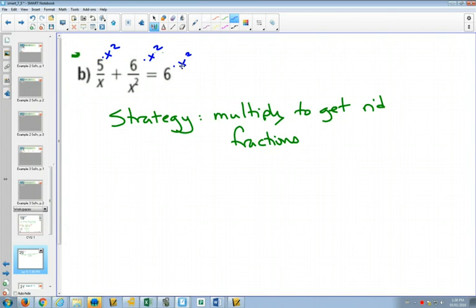I can show that by distributing right away. Every single term will get multiplied by x squared. So you'll multiply the first one by x squared, the second one by x squared, and the other side. But that technically is just multiplying by x squared on each side once.